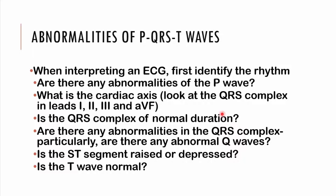Remember that whenever you're interpreting your ECG, you first want to identify the rhythm. So you ask yourself: are there any abnormalities of the P waves? What is the cardiac axis? When looking at the cardiac axis, please look at lead 1, lead 2, lead 3, as well as lead AVF.